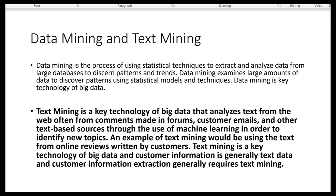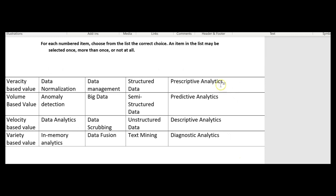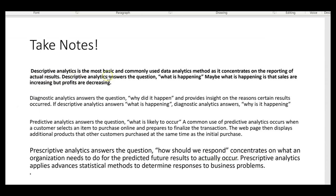Now let's look at the four types of analytics: prescriptive, predictive, descriptive, and diagnostic. Descriptive analytics is the most basic and commonly used type. It concentrates on reporting actual results and answers the question: what is happening, or what just happened? For example, sales are increasing but profits are decreasing. Independent auditors are most interested in descriptive analytics because it deals with historic actual results.